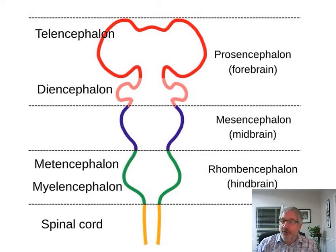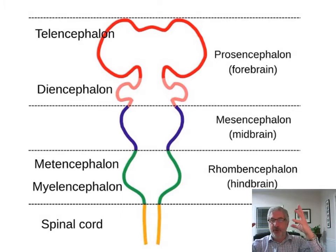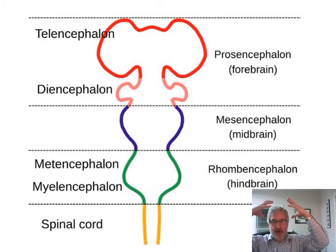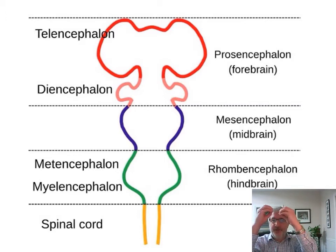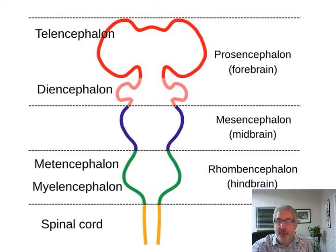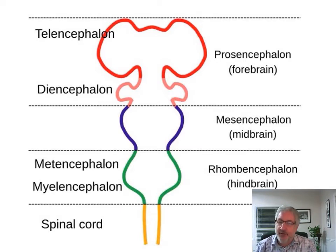This is a frontal section showing how the forebrain — the prosencephalon, which becomes the telencephalon, which becomes the cerebrum — bulges out. It's not just a fold over but also a bulging out of the brain. The diencephalon also bulges out a little bit, where the thalami are, and then the midbrain, then the hindbrain — the metencephalon and the medulla oblongata — and the spinal cord below that.